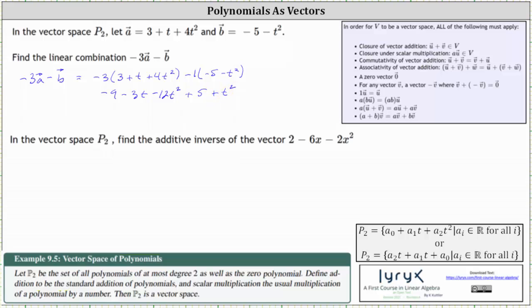And now combining like terms, notice how we have two constants and also two t² terms. -9 + 5 is -4, and we have -3t, and then we have -12t² + t², which is -11t², or -11t².